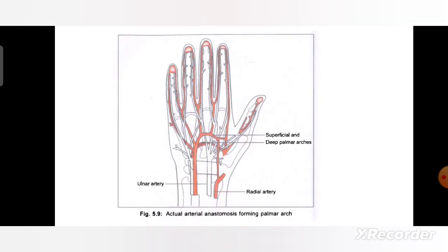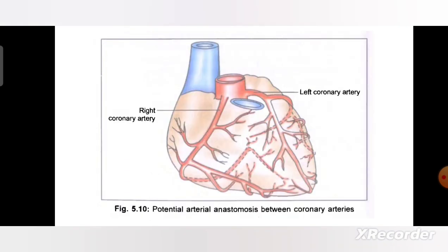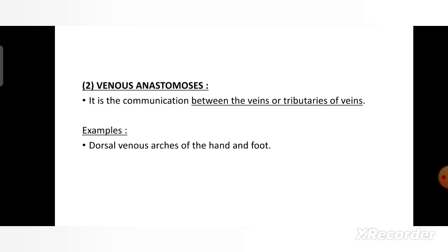This is an example of arterial anastomosis in the palmar arch. This is also an example of arterial anastomosis between coronary arteries. Next is venous anastomosis — a communication between the veins or tributaries of the veins. For example, dorsal venous arch of the hand and foot.